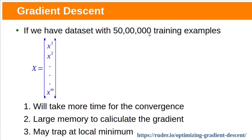Suppose if we have a dataset with 5 million training examples, where x is the input data. With gradient descent, for a single weight update we need to process the entire dataset — all 5 million training examples for a single weight updation. If the dataset is too large it will take more time for convergence, and also it requires large memory to calculate the gradient on the entire dataset. If the error surface is non-convex it may trap at a local minimum. These are the problems with the basic gradient descent optimization algorithm.